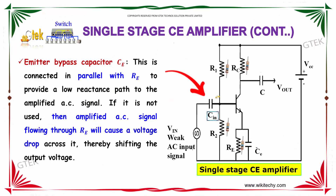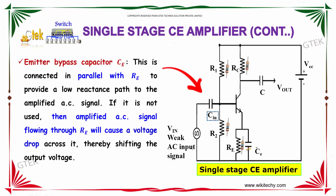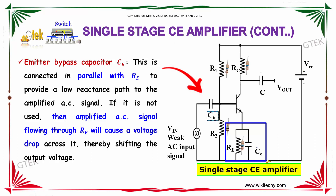The emitter bypass capacitor CE is connected in parallel with RE. This is to provide a low reactance path to the amplified AC signal. If it is not used, then the amplified AC signal flowing through RE will cause a voltage drop across it, thereby shifting the output voltage.